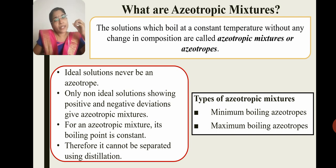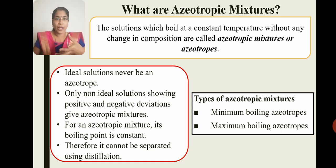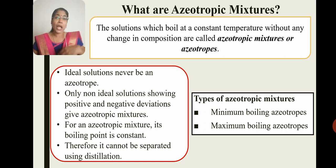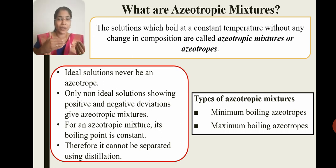For an azeotropic mixture, its boiling point is constant. Because the azeotropic mixture boiling point is constant, it cannot be separated using distillation. If we start fractional distillation, the boiling point of one component is similar to the solution's boiling point.